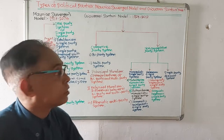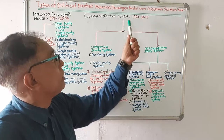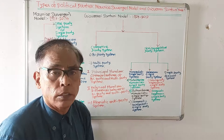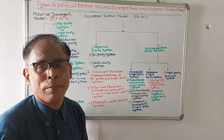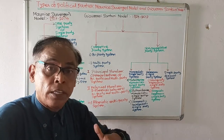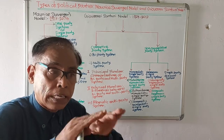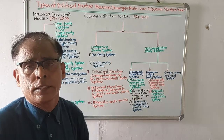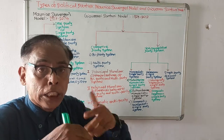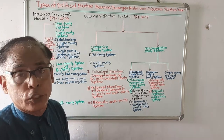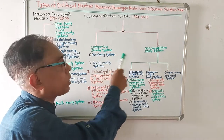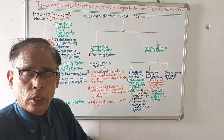Now we discuss Giovanni Sartori's classification of political parties. Giovanni Sartori was born in 1924 and died in 2017. He developed his own classification of political parties, categorizing them into two categories: one is the competitive party system, and the other is the non-competitive party system.